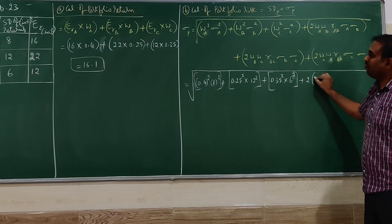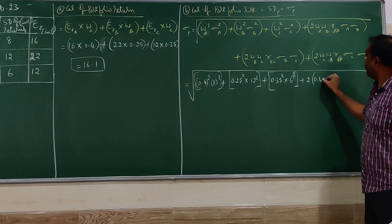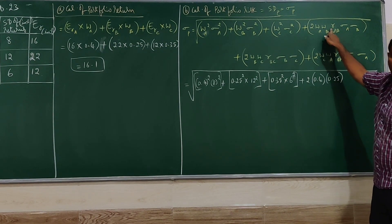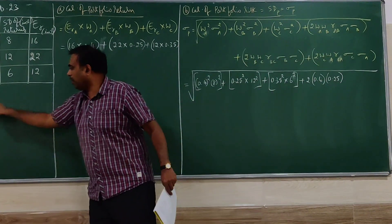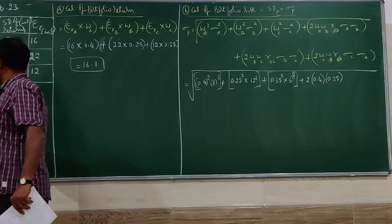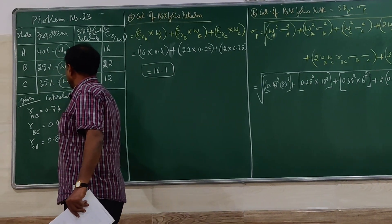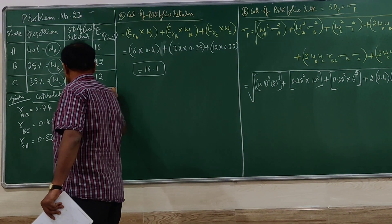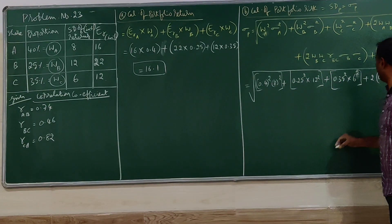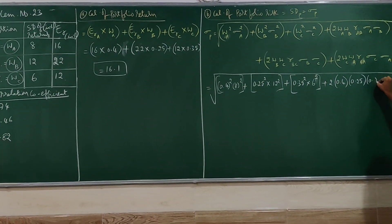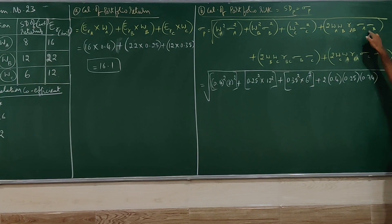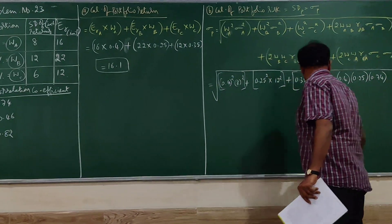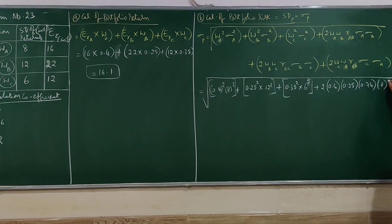So 2 into weight of A, 0.4, weight of B, 0.25, then correlation of A, B. Correlation of A, B, all are given here. Correlation coefficient values. So A, B is 0.74, then standard deviation A into standard deviation B. Standard deviation A is 8, B is 12. 8 into 12.